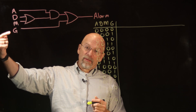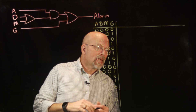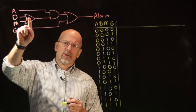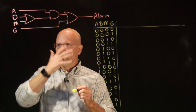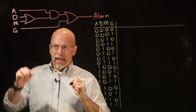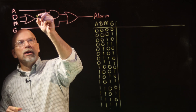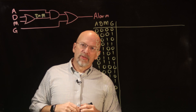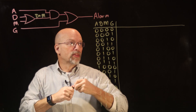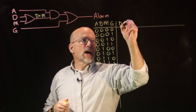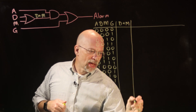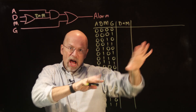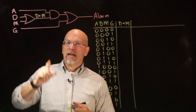Looking at the expression going from the input side to the output side, the first gate we pass through is this OR gate. The output of this OR gate is D OR M, using the plus sign to represent the OR operation. We're going to use this truth table as a step-through of the circuit — every time we pass a gate, we create a new column. So the first column is D OR M.